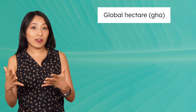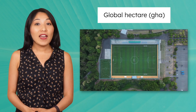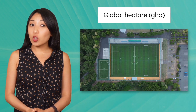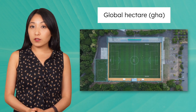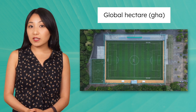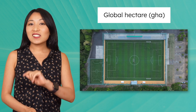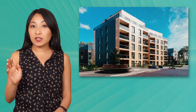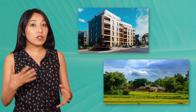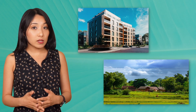To measure ecological footprints, scientists use something called a global hectare. A hectare is about the size of a soccer field, and a global hectare represents land or water that produces resources at the average global rate. This lets us compare the environmental impacts of someone living in a city apartment to someone in a rural village, even if they live in completely different environments.